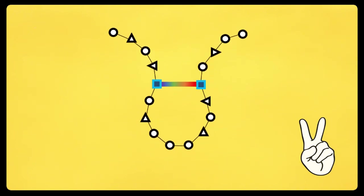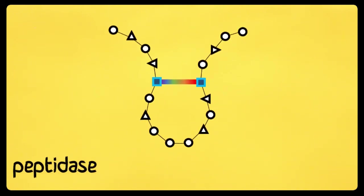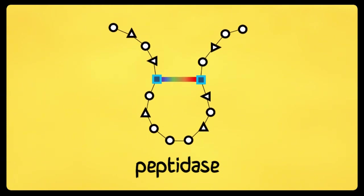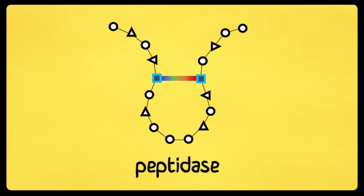This is where the second E. coli product, peptidase, comes in. Peptidase is an enzyme that cuts a certain sequence of amino acids, the same sequence that falls between the two cysteines in the aforementioned peptide.